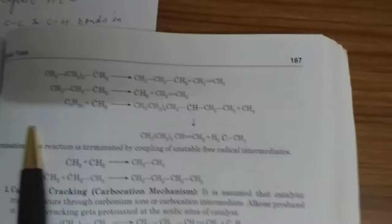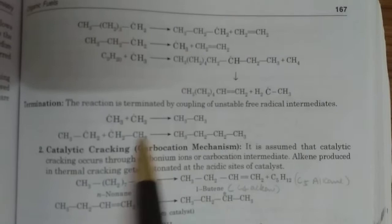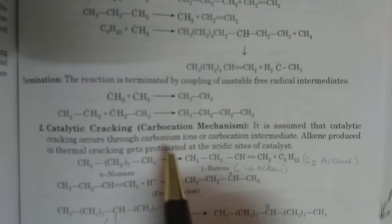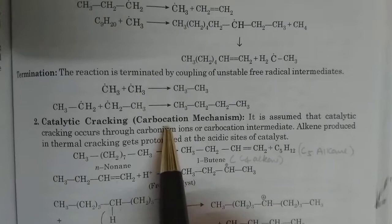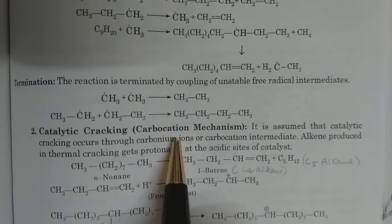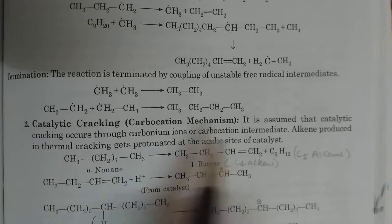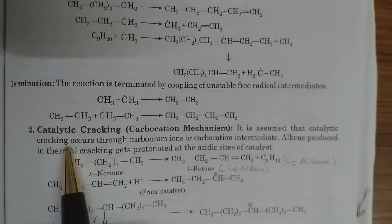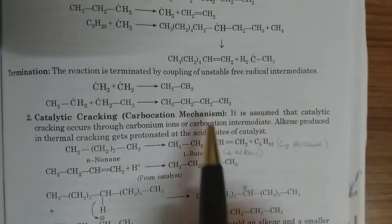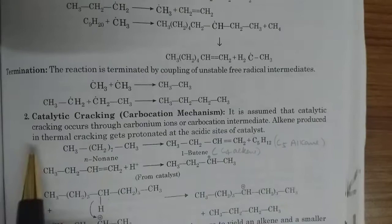Now we discuss catalytic cracking, which follows the carbocation mechanism. A carbocation, also known as a carbonium ion, is a carbon bearing a positive charge. It is an electron-deficient species. It is assumed that catalytic cracking occurs through the carbocation or carbonium ion intermediate. The alkene produced in thermal cracking gets protonated at the acidic site of the catalyst.